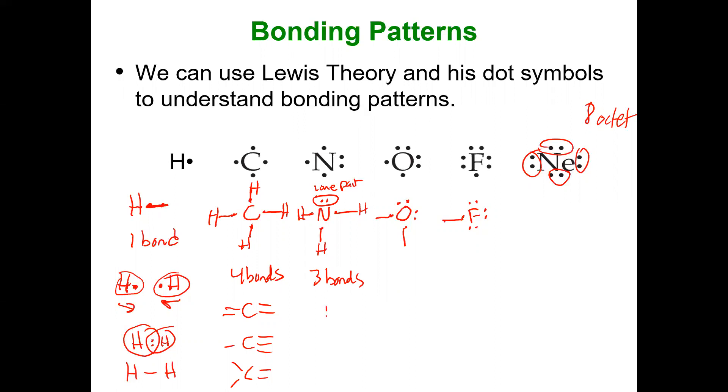But again, the nitrogen can have a double and a single and a lone pair. Or it could have a triple and a lone pair. And we'll see that's the case with the diatomic nitrogen. Just like we see a single bond for the diatomic hydrogen.